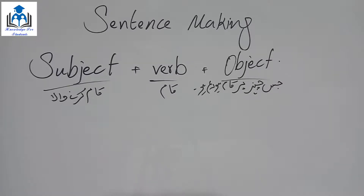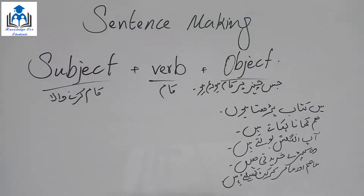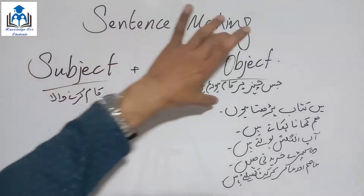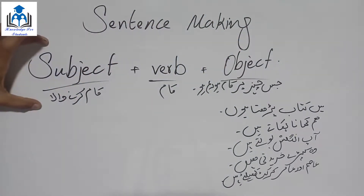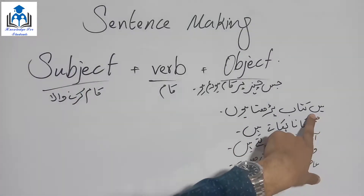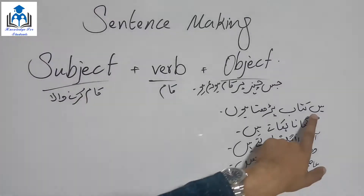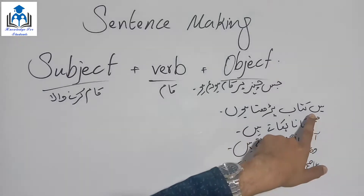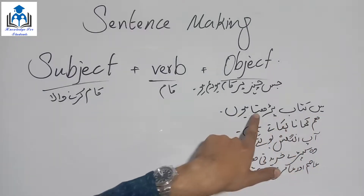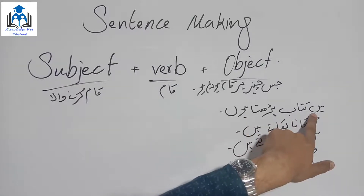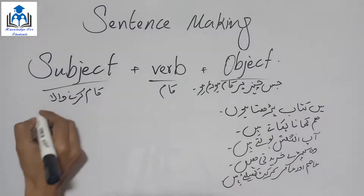Let's look at some examples — we'll take some Urdu statements and translate them into English. We have written four or five statements. Let's translate them following the SVO structure. First statement: 'میں کتاب پڑھتا ہوں' (I read a book). First, who does this action? Who reads the book? I do — so the subject's English is written first.